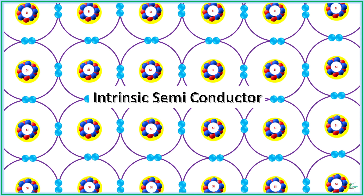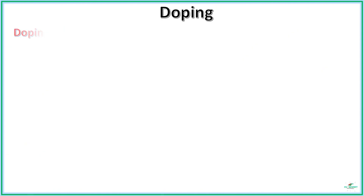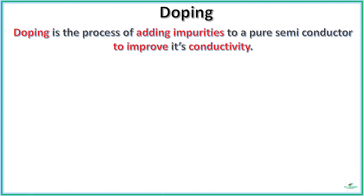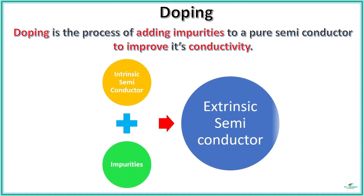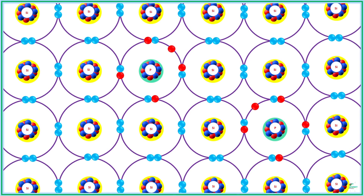But what if we want to make them conducting at room temperature? What do we need to do to improve the conductivity of these materials? The conductivity of a pure or intrinsic semiconductor is improved by the process called doping. Doping is the process of adding impurities to the pure or intrinsic semiconductor, and the semiconductor formed by adding impurities is called an extrinsic semiconductor.